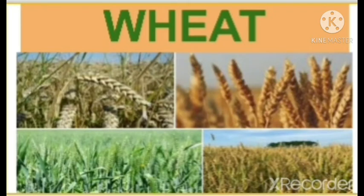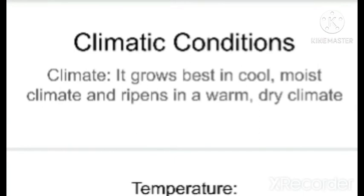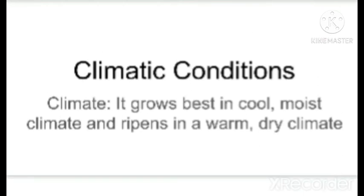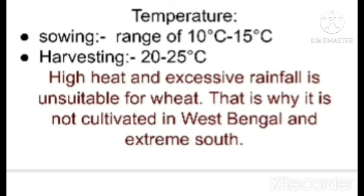Now let's look at the important climatic requirements for the cultivation of wheat. Wheat requires a cool, moist climate during its growing period, but when it ripens and reaches the harvesting season it requires a warm and dry climate with abundant sunshine. This climate is available in the northern part of India, which experiences a cool climate from November onwards, and by the end of February the temperature increases — so both sowing and harvesting conditions are met in the northern plains.